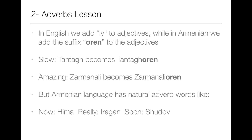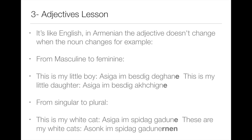But in Armenian there are also natural adverb words, like 'now' which is 'hemug', 'really' which is 'eragun', and 'soon' which is 'shudov'.